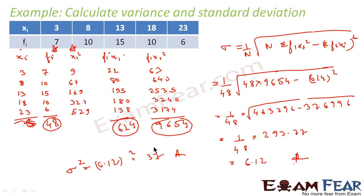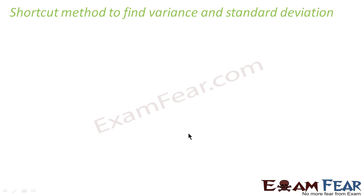To recap what we have done: using this formula, we needed summation of fi·xi squared and summation of fi·xi. We calculated fi·xi, fi·xi squared, their summations, and then substituted into the formula to get the answer.